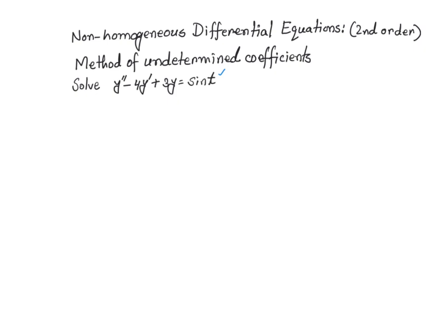If we do so, our general solution for this equation is going to be y(t) equal to y_h(t), which is the homogeneous solution, plus the non-homogeneous solution, or what we call the particular solution. That is your general solution. Now let's go ahead and solve the homogeneous part, which is very easy.